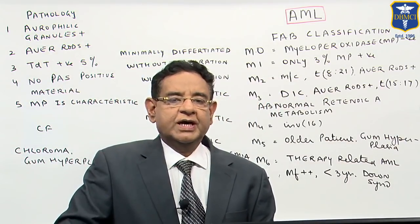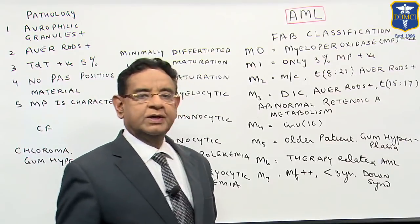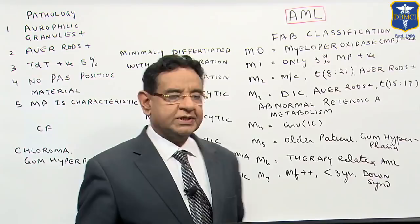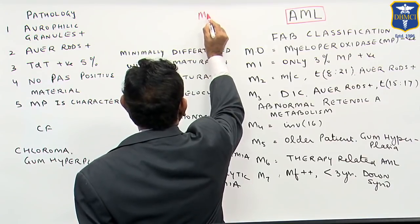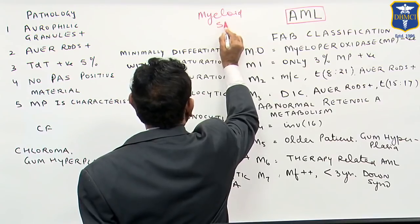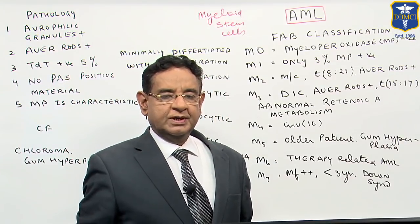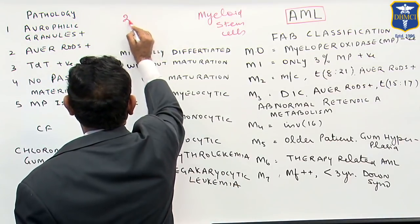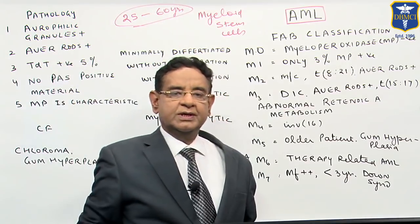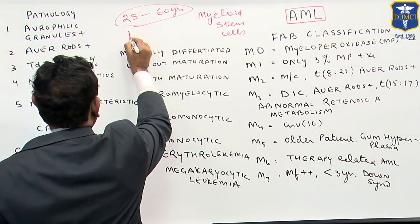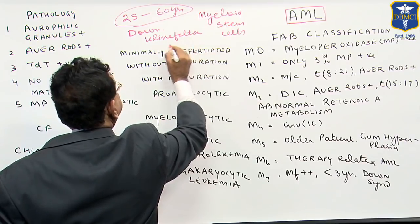Hello friends. Now I will be talking to you about acute myeloid leukemia. AML is the abrupt onset of malignant transformation of myeloid stem cells in the bone marrow. The common age of AML is between 25 to 60 years. It is more common in Down syndrome, Klinefelter syndrome, and Turner syndrome.